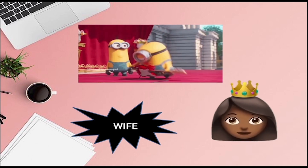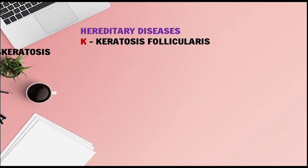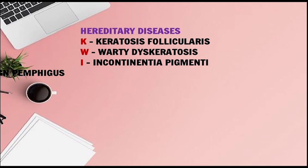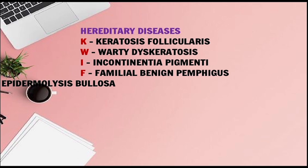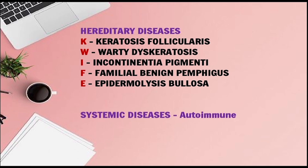Now let's see whom he was trying to contact — Kevin's wife. She is a hereditary queen, so we are talking about hereditary diseases. K for Keratosis Follicularis, W for Warty Dyskeratosis, I for Incontinentia Pigmenti, F for Familial Benign Pemphigus, E for Epidermolysis Bullosa.